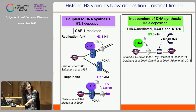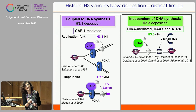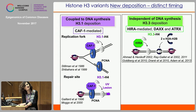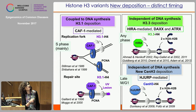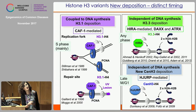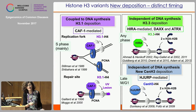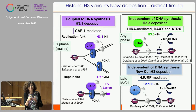There is also a pathway for new deposition independent of DNA synthesis. Here I'd like to stress the role of HIRA, which operates broadly, and DAXX-ATRX, which has been put forward to enrich the H3.3 variant in particular regions. There is also a pathway for deposition of CenH3 mediated by HJURP. Importantly, CAF-1-mediated deposition operates mainly in S phase, HIRA can operate any time during the cell cycle, and HJURP operates in late mitosis/G1.